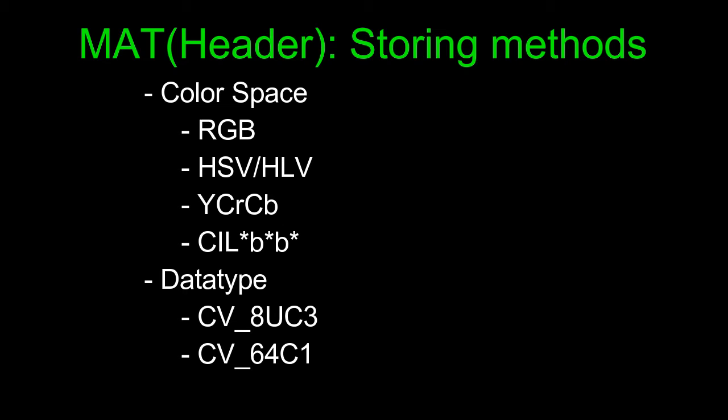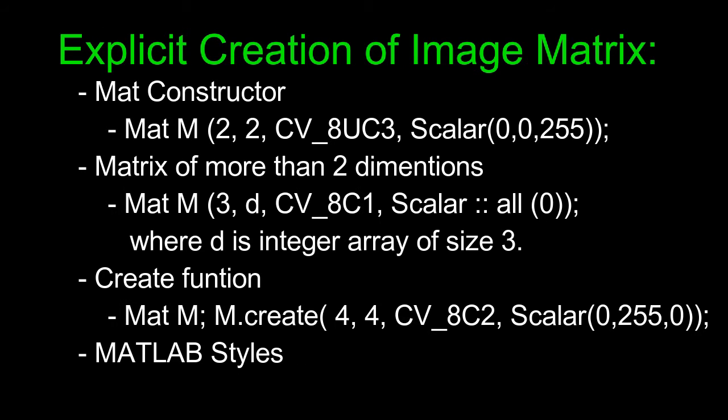There are some explicit methods for creating image matrix. You can see that Mat class has its constructor and we can pass the values in the constructor in different ways. The first one is representing a matrix of 2x2 size.